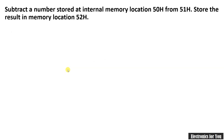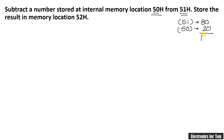Next program is: subtract a number stored at internal memory location 50H from 51H. Note that we are having two numbers. One is stored at 51H — let us assume that at 51H you are having a number 80H, and at 50H you are having a number say 20. Whatever the result is, it will be automatically stored into the accumulator if you are using the SUBB instruction. The sub-instruction format is SUBB A, comma operand.